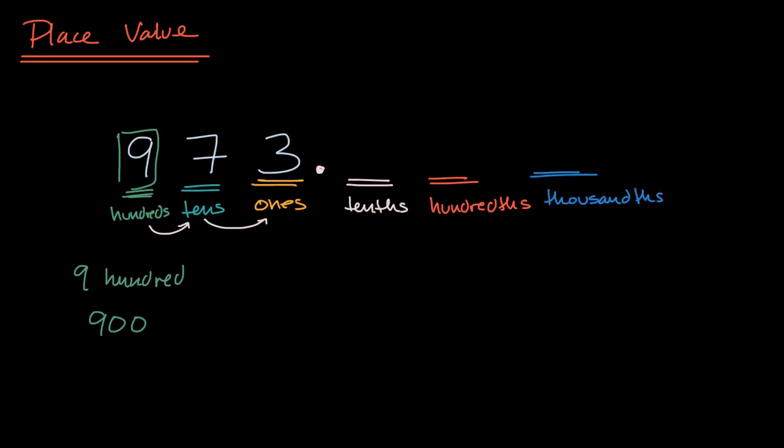And so, for example, if I were to extend this number, instead of it just being 973, if I were to write 973.526, what do these numbers, these digits represent?